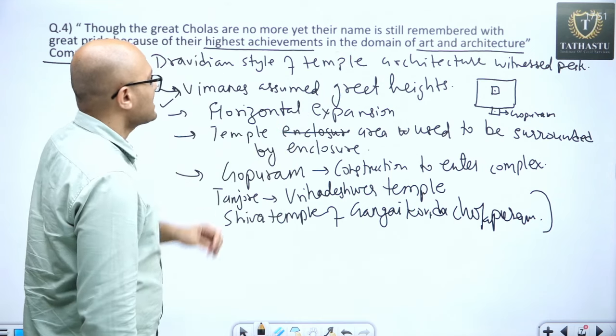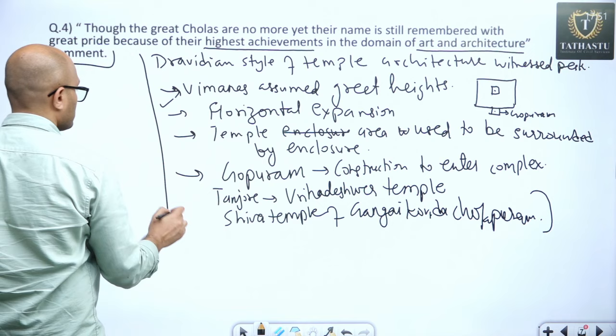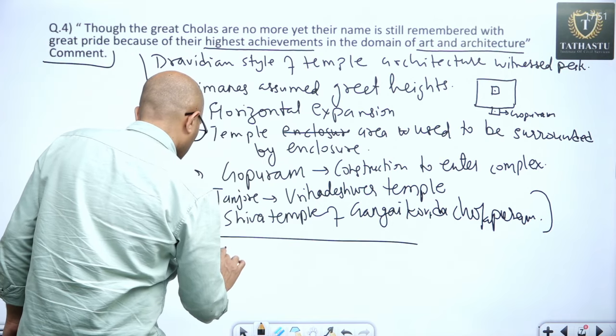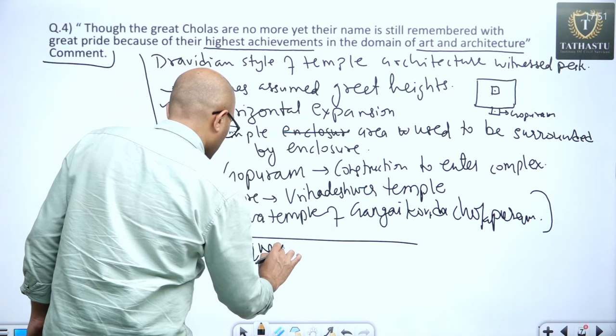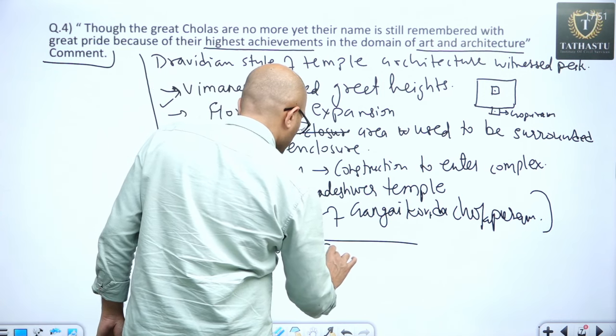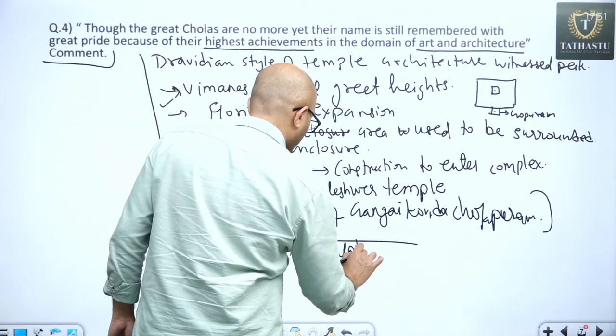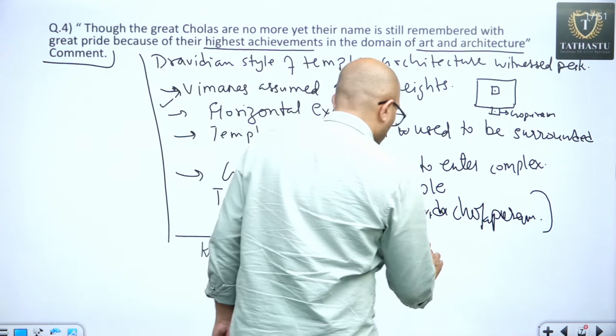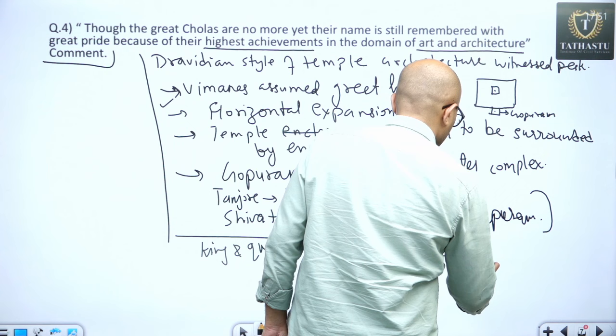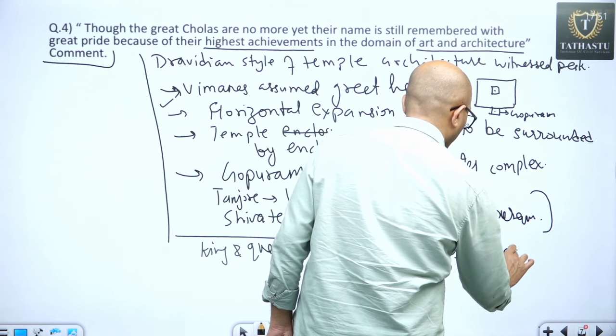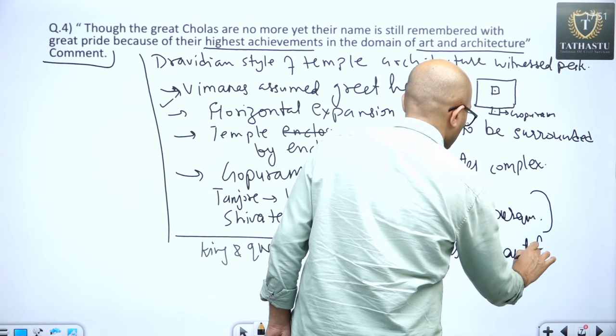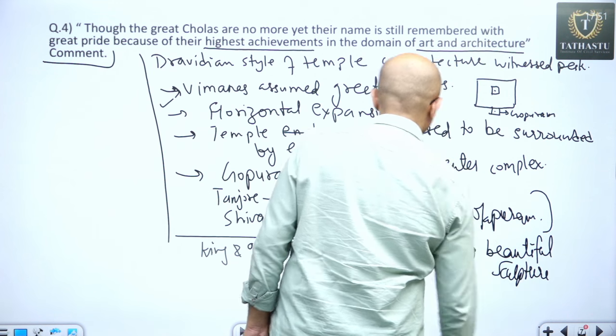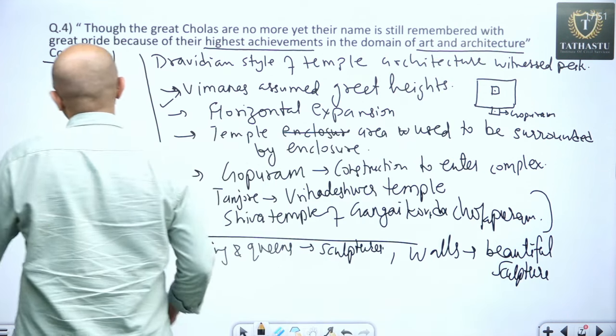Now, if we see sculpture and other things, number one, kings and kings' queens, their sculptures used to be placed inside temples. Also, the walls of these temples used to have beautiful sculptures which reflect the growth of sculpture attained during time of Cholas.